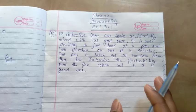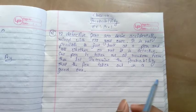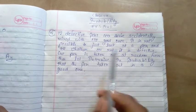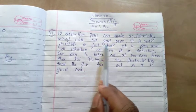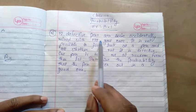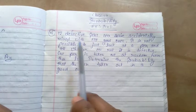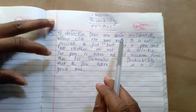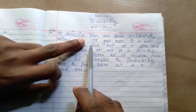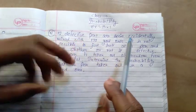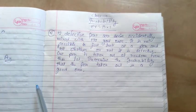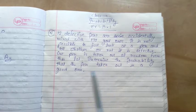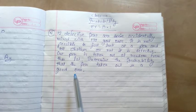Ham log kya dekh rahe hain? 12 defective pens the, kharab pens the. Aur good pens kitne? 132 pens hain. Ab kya hota hai? Yeh 12 pen in 132 pens mein accidentally mil jaate hain. Aur dekh ke bata nahin ja sakta ki sahi pen kaunsa hai, kharab kaunsa hai.